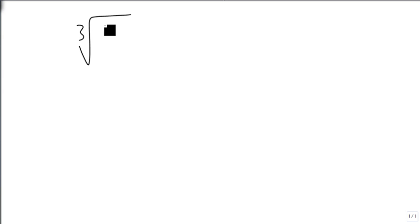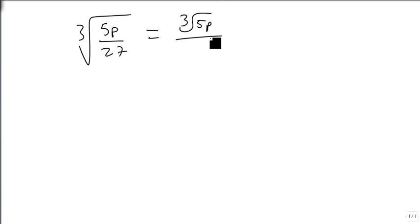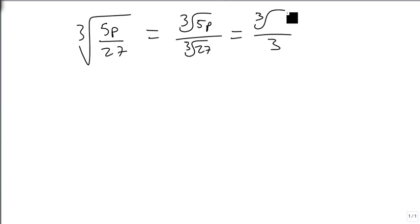Let's also look at another example. Suppose we have the cube root of 5p over 27. This becomes the cube root of 5p over the cube root of 27. The cube root of 27 is 3. And the cube root of 5p is already simplified, so the answer is the cube root of 5p over 3. And this works for any n, as long as the roots are the same.